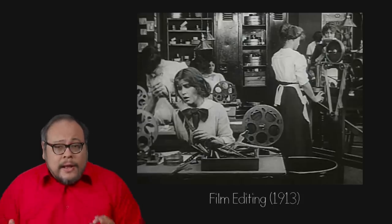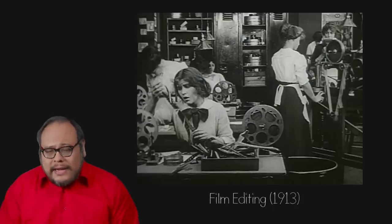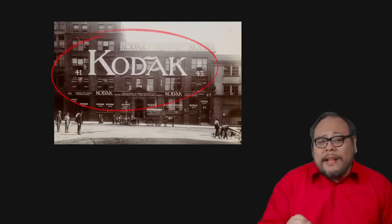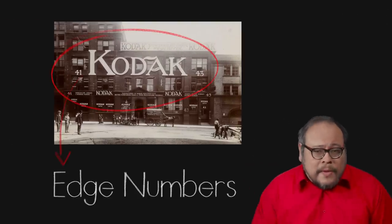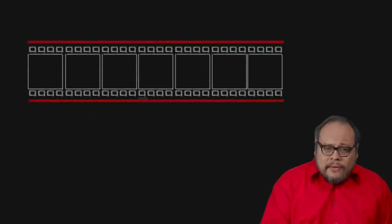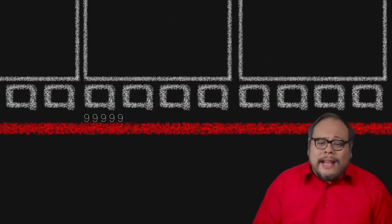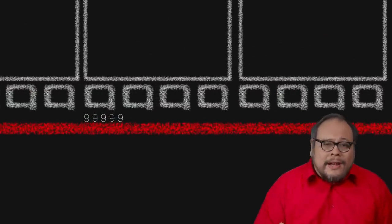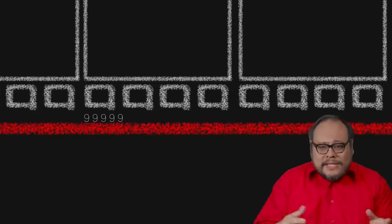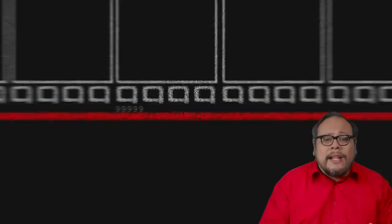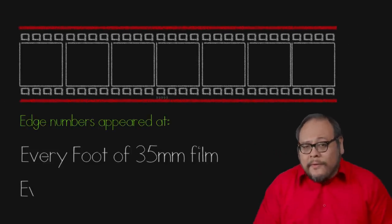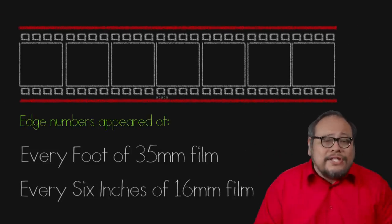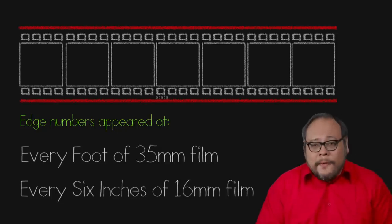Then in 1919, Eastman Kodak began printing edge numbers as a latent image on unprocessed film. The numbers would start at zero and go to 99,999 before starting all over again. After the negative was exposed in the camera and processed, these codes would appear at every foot of 35mm film and every 6 inches of 16mm film.